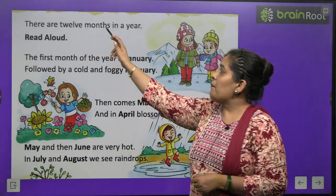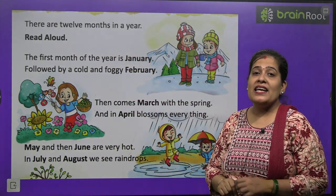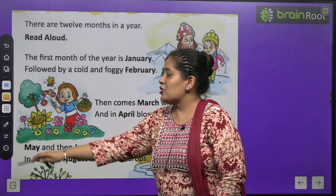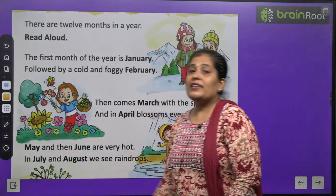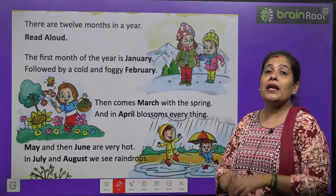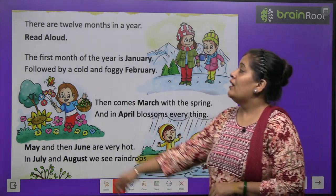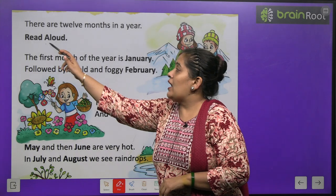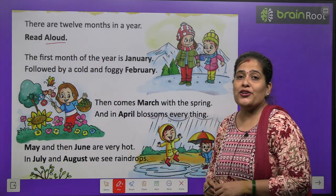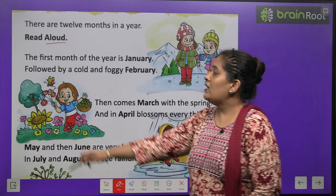There are 12 months in our year. 1 saal mein kitne mahine hote hain bachon? There are 12 months. 1 saal mein 12 mahine hote hain. Chaliye, ab hum inko padhenge ki wo kaun kaun se month hote hain.